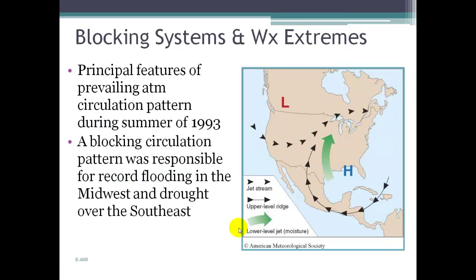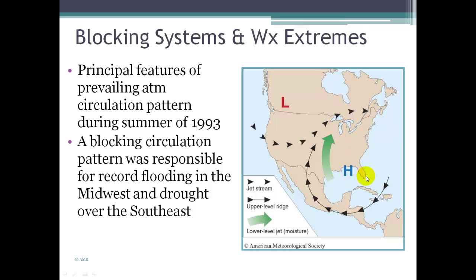Another example of a blocking system happened in 1993, again in the summertime in North America. A high pressure system camped out over the southeastern United States and the jet stream dipped down, creating a clash between two contrasting air masses. Circulation around the high is clockwise, so warm, moist air swooped up on the western side and met the jet stream area, causing a lot of precipitation. This resulted in record flooding in the Midwest and drought in the southeast, which was in the heart of the high pressure cell with no chance of precipitation.